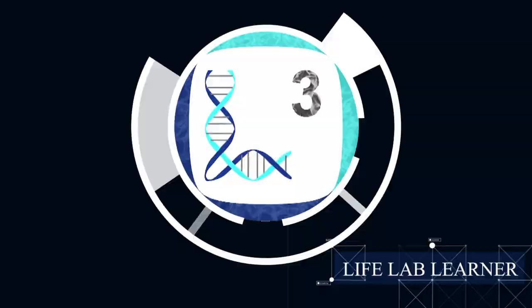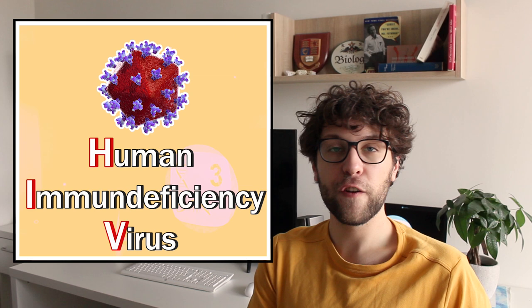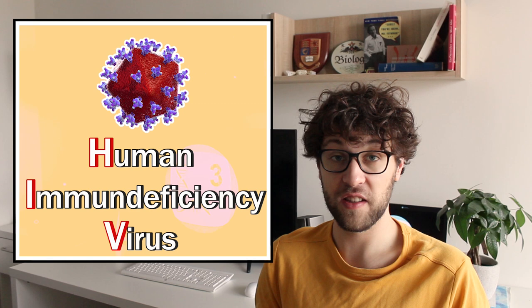So, as always, let's start by discussing some biological background. The human immunodeficiency virus, or HIV, is the main cause of the acquired immunodeficiency syndrome, or AIDS. As the term immunodeficiency in both names suggests, this virus destroys the immune system. But how does this work?